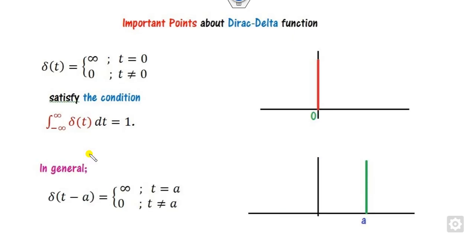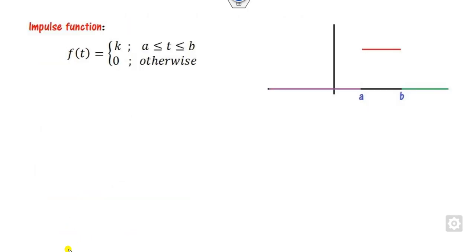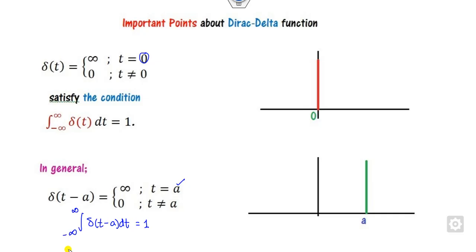In general, instead of 0 if I represent the point as 'a', that is a scaling shift. If you change the origin to 'a', then the area under the curve should also be 1. So you can write that the integral of delta(t minus a) equals 1 over the domain. Now, what is the meaning of this area under the curve — what is the meaning of this integration?